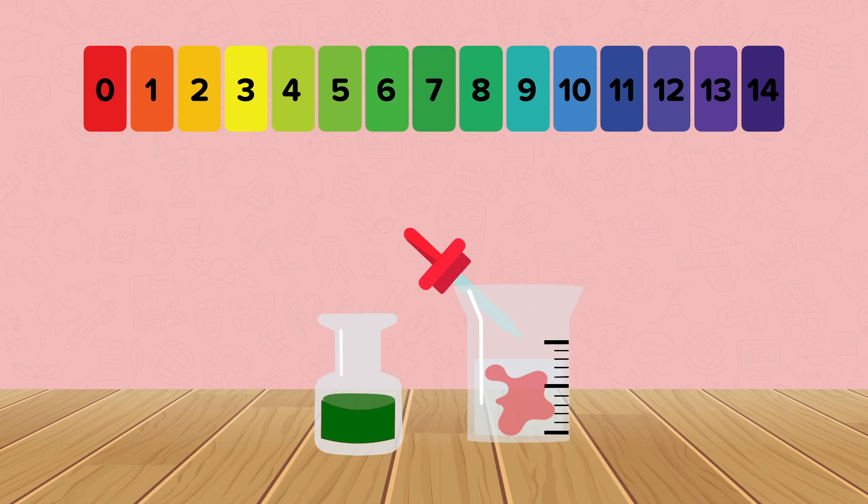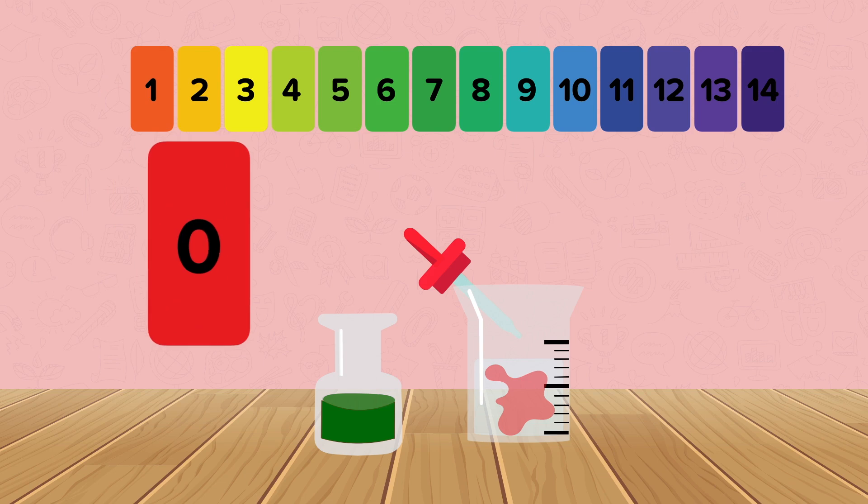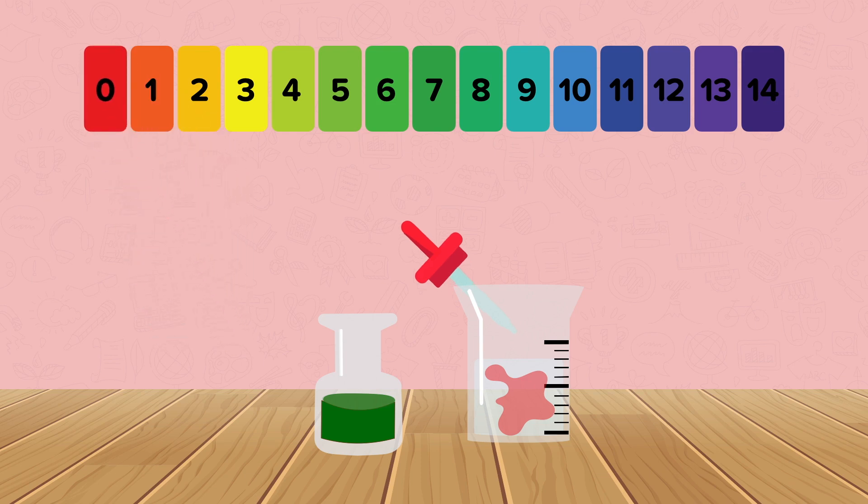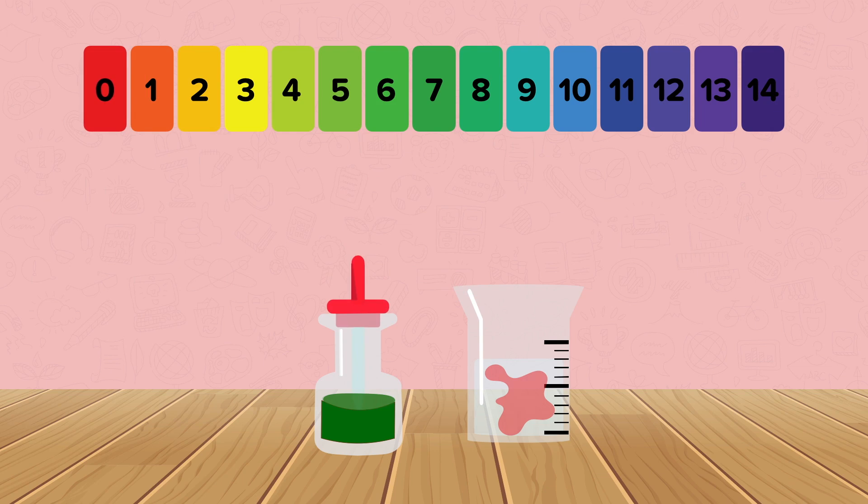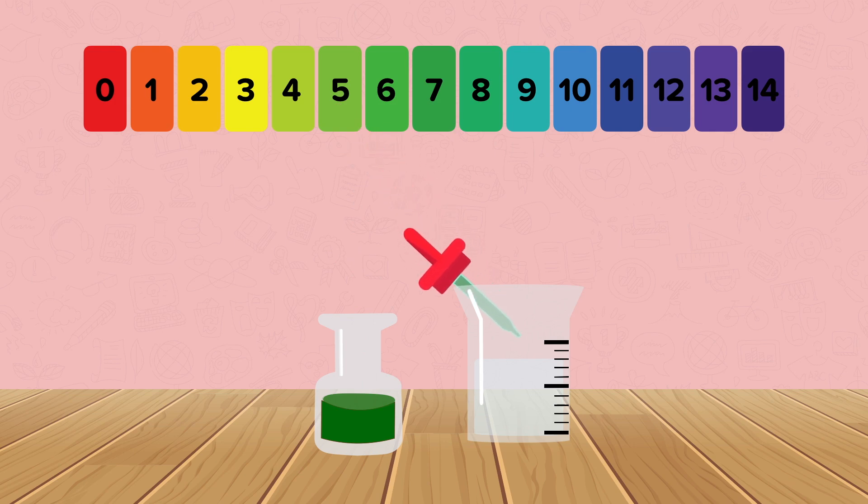If the solution turns red it has a pH of 0 so is very acidic. If the solution turns green it has a pH of 7 so it is neutral.